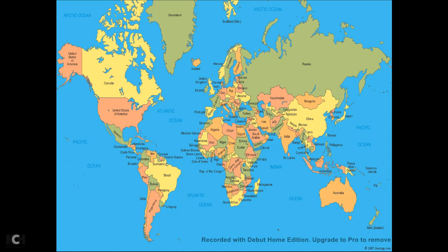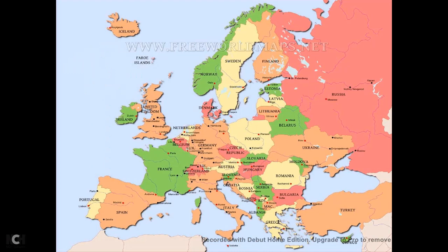Revolution comes when we see change — change in anything — and at that time we saw change in the industry. When the change came, it was not limited to one particular country; that change spread to many countries of the world. First of all, the Industrial Revolution came in Europe, including the United Kingdom, or England.